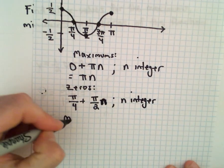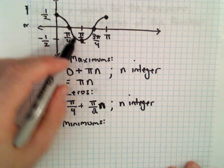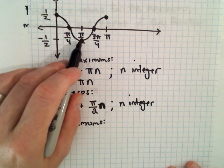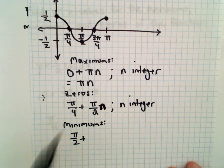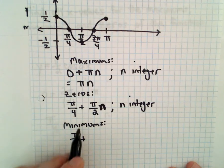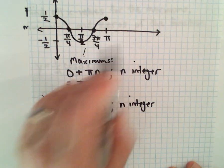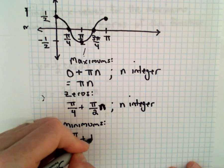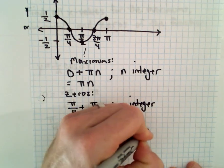And to get the minimums, the first positive minimum, the first place where we hit -1/2, is at π/2. And the same thing, just like we did for the maximums, you have to complete a full period before you get back. So that'll be πn, again where n is an integer.